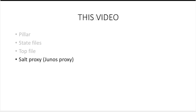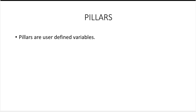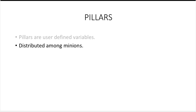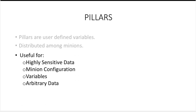So let us start with pillars. Pillars are user-defined variables which are distributed among minions. Pillars are very useful for specific sensitive data. This is so because not all minions can access all the pillars. As a user, we can specify what pillars are meant for what minions.